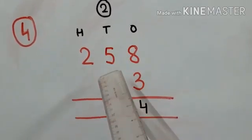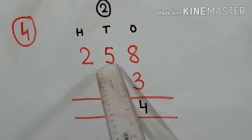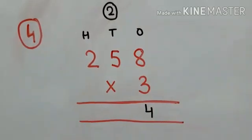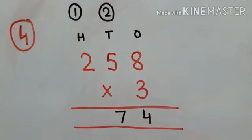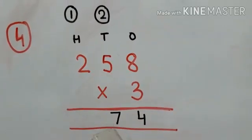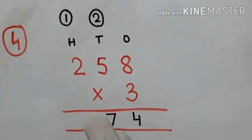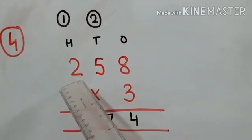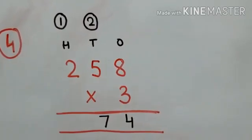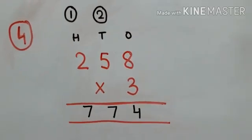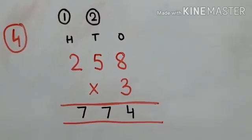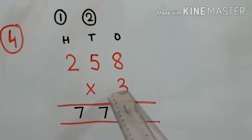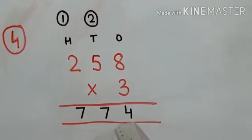We multiply with the tens-digit number that is 5 — five threes are 15, and 2 is already carried, so 15 plus 2 is 17. We write 7 down and 1 is carried to the hundreds place. Then we multiply 3 with the hundreds-digit number 2 — three twos are 6, plus 1 carried, gives 7. So when we multiply 258 with 3, our answer is 774.